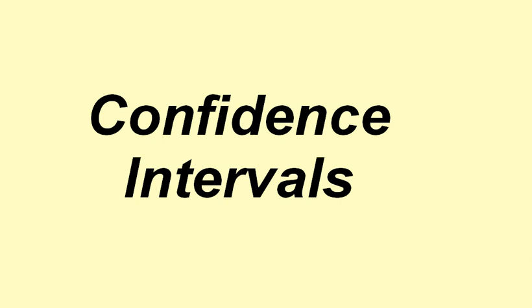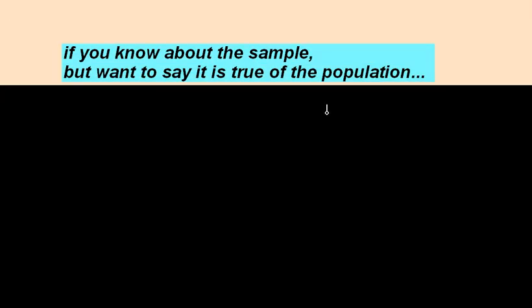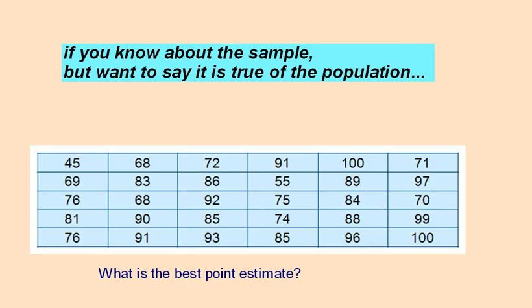We're going to study confidence intervals. This is when we want to know something about the population mean mu. If you know about the sample but want to say it's true of the population, the first place to start is called the best point estimate.